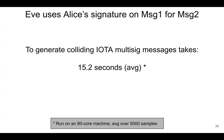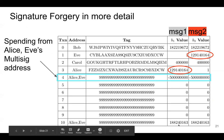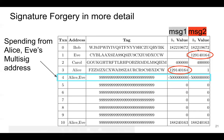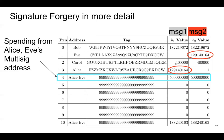Generating colliding IOTA payments takes about 15 seconds on average on an 80-core machine, averaging over 5,000 collisions that we found. We wanted to do this for valid IOTA payments, so we created two payments — message one and message two — that collide. Message one pays Alice 29 million IOTA and message two pays Eve 29 million IOTA. Eve can show Alice message one, say 'sign this, you get 29 million IOTA,' Alice signs it, and now Eve can use that signature to authorize message two, because both messages hash to the same value.